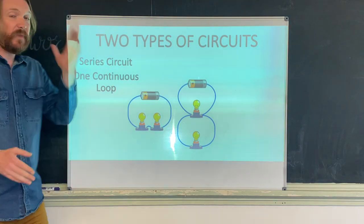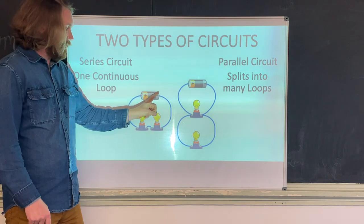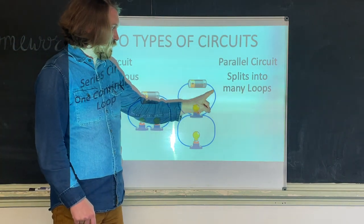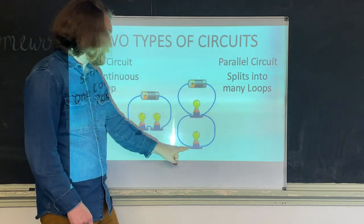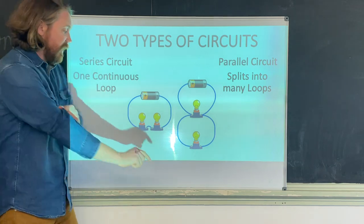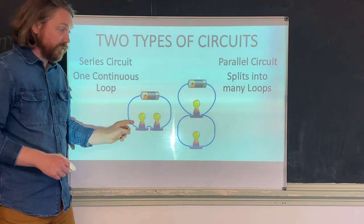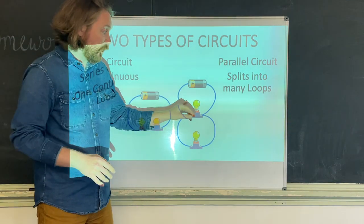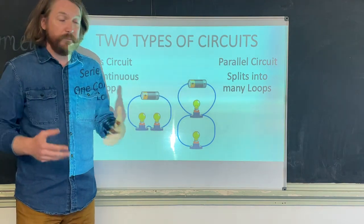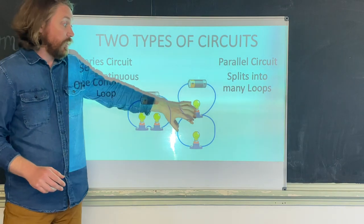A parallel circuit is different from a series circuit because parallel circuits are not one continuous loop. In a series circuit, electricity goes through the first light bulb and immediately into the second. In a parallel circuit, the wire comes out, goes into the first bulb, but then splits into a completely separate loop. Series loops are cheap and easy to make, but if one bulb goes out, they all go out.